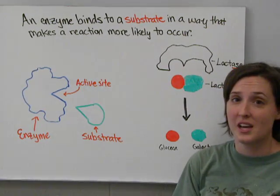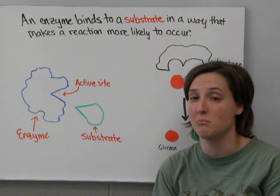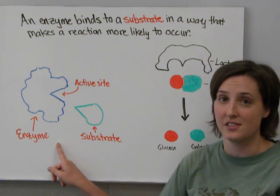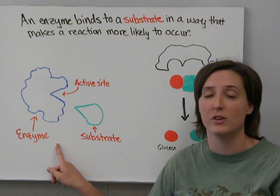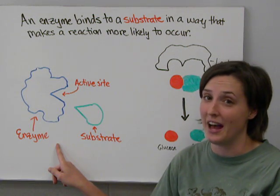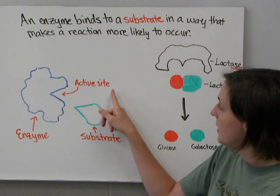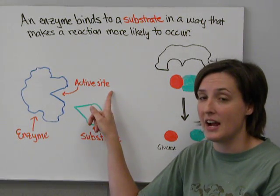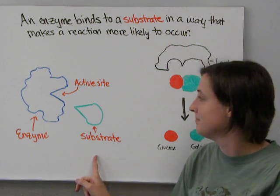An enzyme binds to a substrate in a way that makes the reaction more likely to occur. You have to keep in mind that in real life enzymes are 3D — they're not flat. Each enzyme has an active site, and that active site is what the substrate binds to.